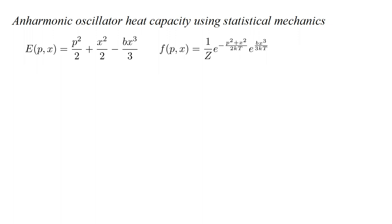We know that the probability that momentum and position will take on particular values, at a particular temperature, is given by a decreasing exponential function of energy. We write f of p, x, equals one over z, e to the minus p squared, plus x squared, over two kt, times e to the bx cubed, over three kt.